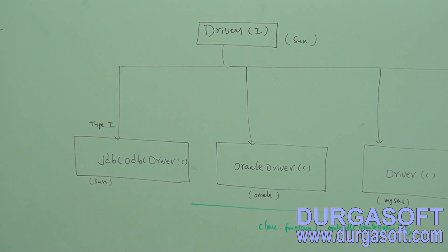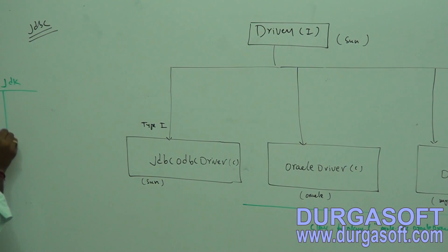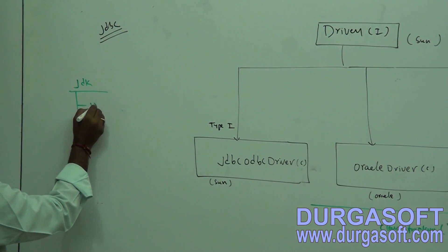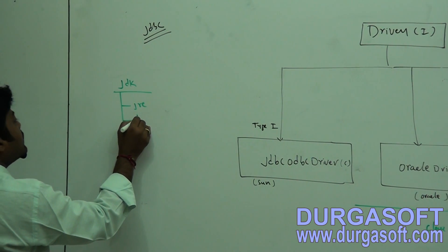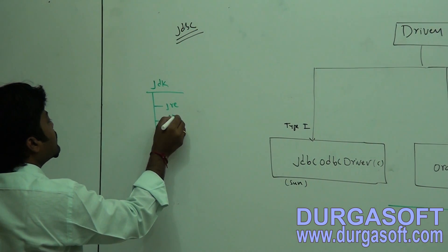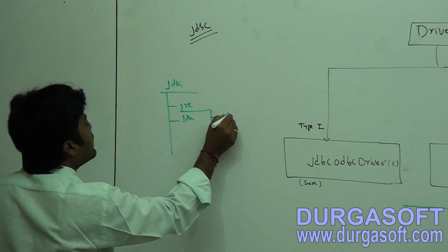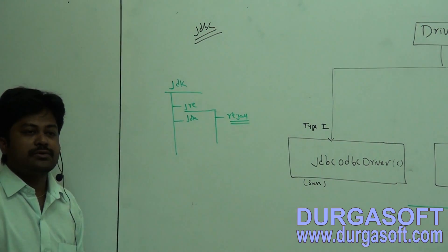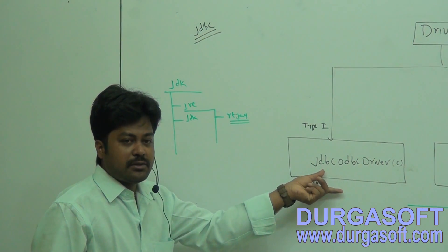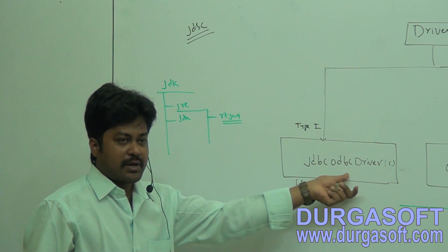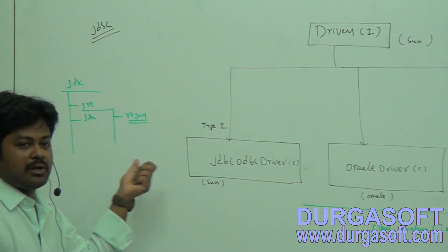Sun will provide some jar files along with your JDK installation — JRE and JDK. In the JRE, they make available some jar files. The RT.jar file is used for runtime, and in this RT.jar file, they provide the JDBC ODBC driver class. But the vendor-specific classes are not in RT.jar. So whatever class you have, the jar file containing that class needs to be added to your application.